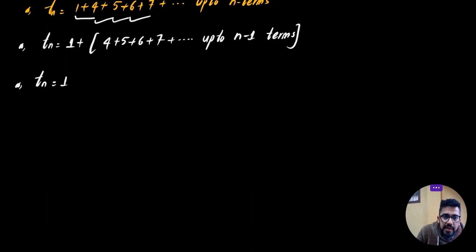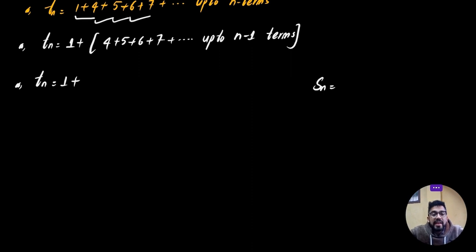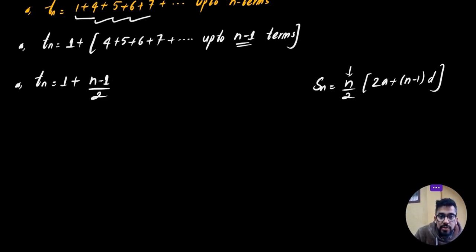The sum 1 plus (4 + 5 + 6 + ... up to n-1 terms). The series 4 + 5 + 6 + 7 + ... is in arithmetic progression. Applying the AP sum formula: sum equals (n-1)/2 times (2a + (n-2)·d), where first term a = 4 and common difference d = 1.